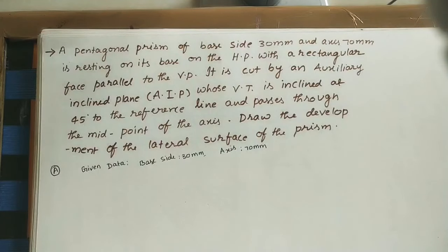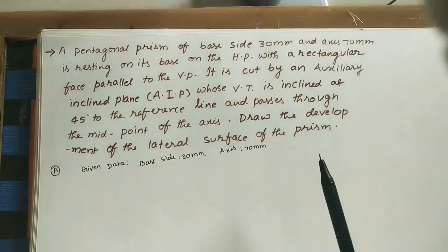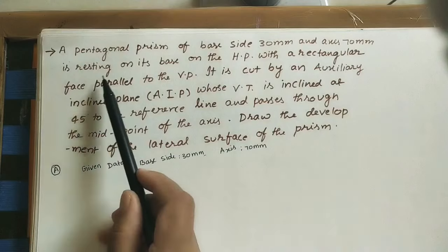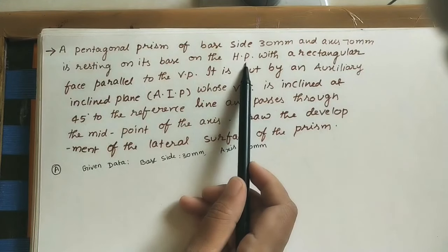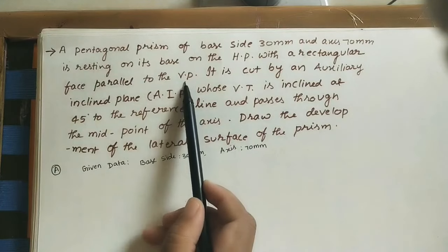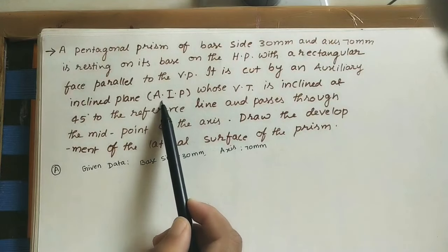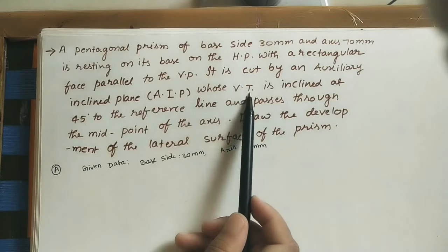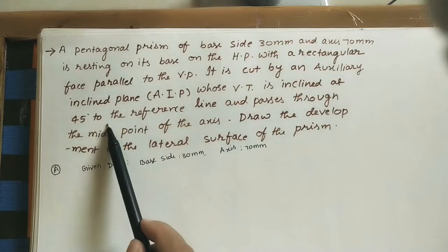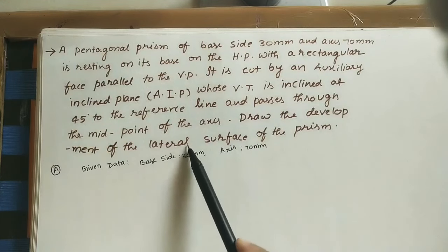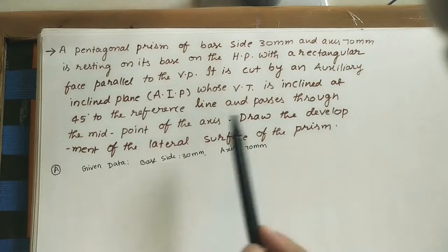Welcome to this channel. Let us discuss the development of surfaces. We are taking a pentagonal prism. The given data is: a pentagonal prism of base side 30 mm and axis 70 mm, resting on its base on the HP (horizontal plane), with a rectangular face parallel to the VP (vertical plane). It is cut by an auxiliary inclined plane (AIP) whose vertical trace (VT) is inclined at 45 degrees to the reference line and passes through the midpoint of the axis. Draw the development of the lateral surface of the prism.